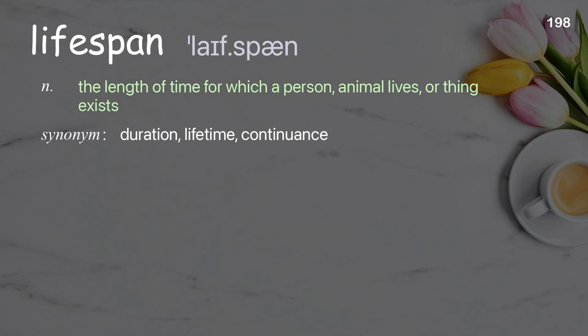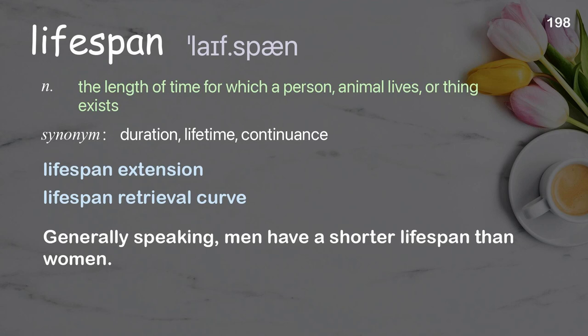Lifespan: the length of time for which a person, animal, or thing exists. Examples: lifespan extension, lifespan retrieval curve. Generally speaking, men have a shorter lifespan than women.